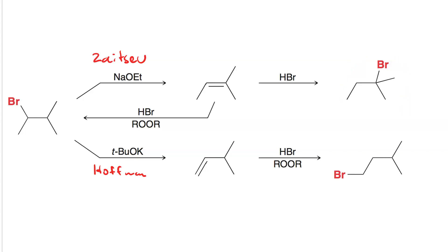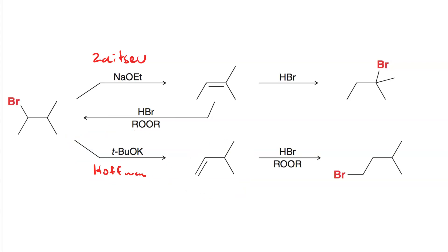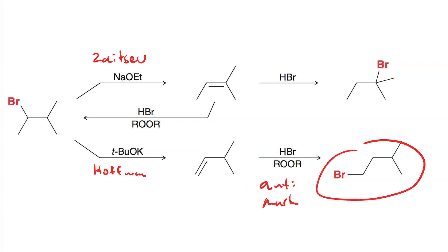If we start off with the Hoffman elimination, we get the less substituted alkene, which if we then do anti-Markovnikov hydrobromination, we get the less substituted alkyl bromide. So on top, we've gone from less substituted to more substituted. On the bottom, we've gone from more substituted to less substituted.